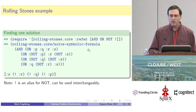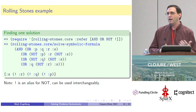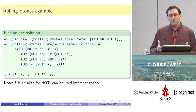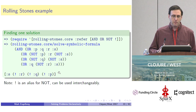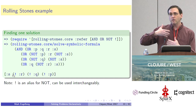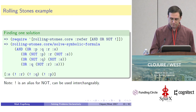Rolling Stones exposes a bunch of constructors for building up formulas. Here I'm using and, or, not — with an exclamation point as an alias for not. There's also if-and-only-if, XOR, and others available. Rolling Stones lets you use any data structure at all as your variable — it doesn't have to be keywords, but in this example I've used keywords. It spits out a list of the truth values by giving you the variables that are true and the ones that are false, with false ones wrapped in the not constructor.